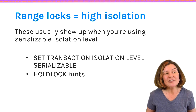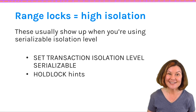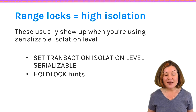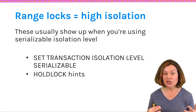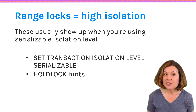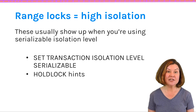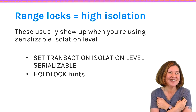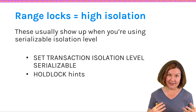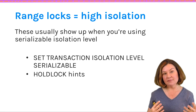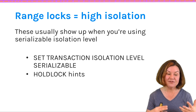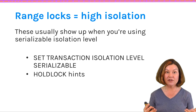Range locks are used when you are using serializable isolation level. You can do this a few different ways: you could say for your session, set transaction isolation level serializable after you connect. You could also be using a holdlock hint in your query. Serializable is a very high level of isolation — very protective. It's saying: I want to make sure none of the weird things that can happen with isolation levels can happen when I'm doing my work.